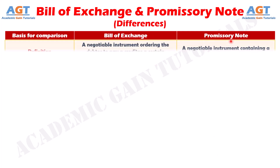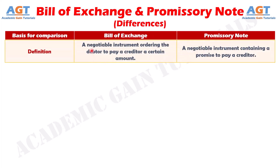Difference number one: A Bill of Exchange is a negotiable instrument ordering the debtor to pay a creditor a certain amount, whereas a Promissory Note is a negotiable instrument containing a promise to pay a creditor.